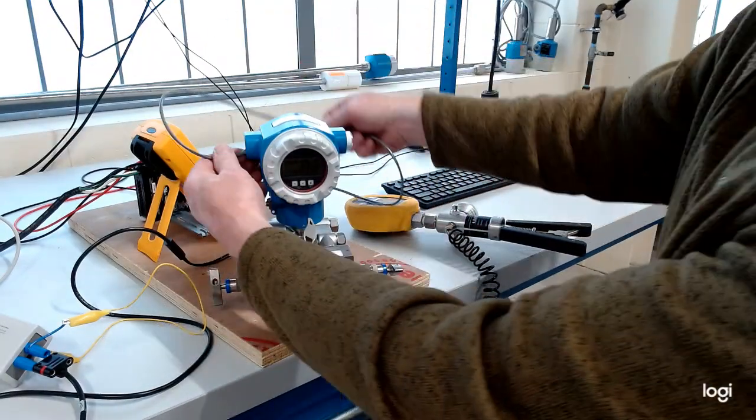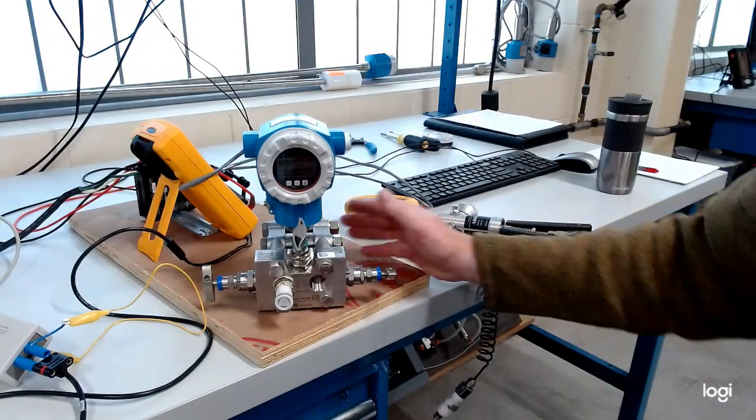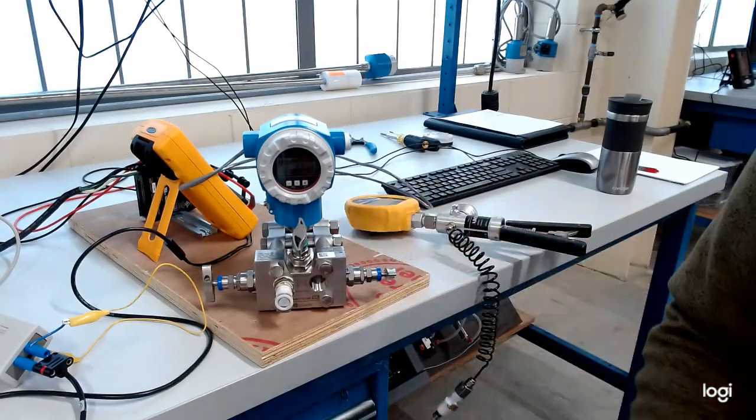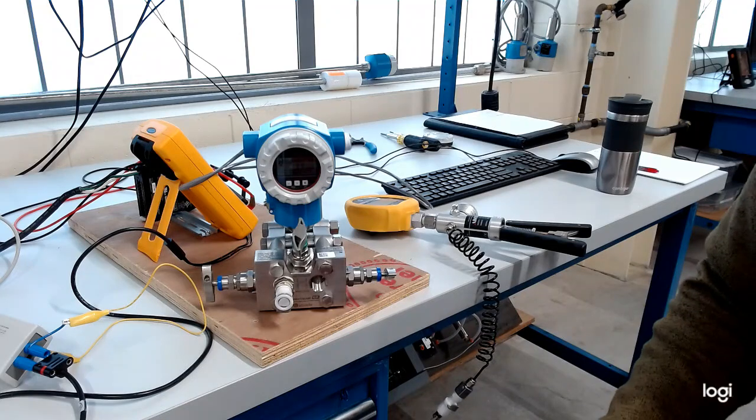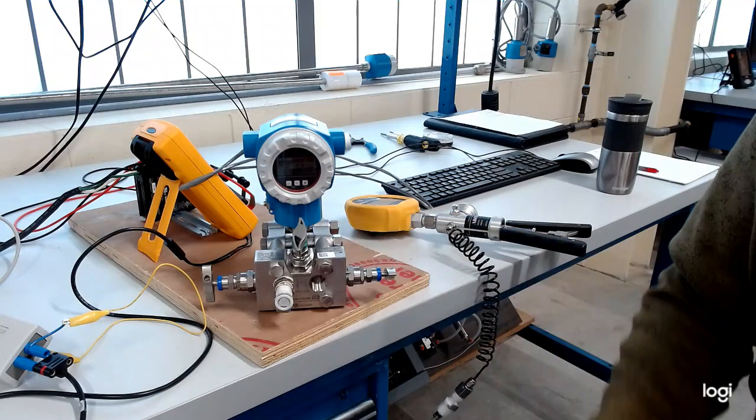The reason that's important is because if you put the higher of the two pressures that you're measuring on the high pressure side and the lower of the two pressures on the low pressure side, you will get a positive reading.